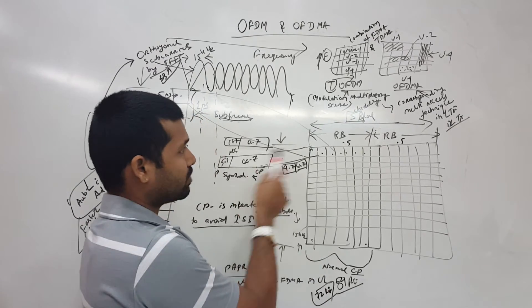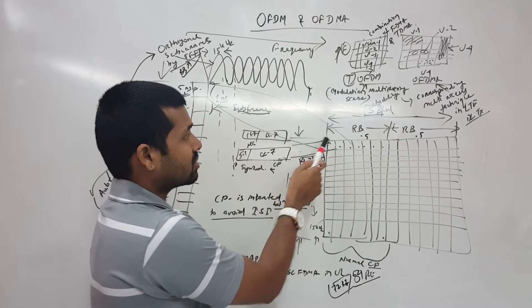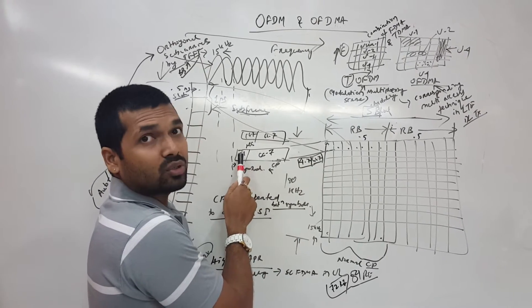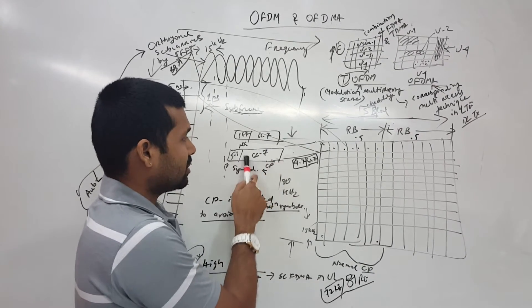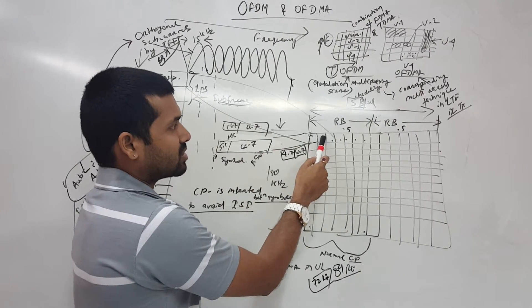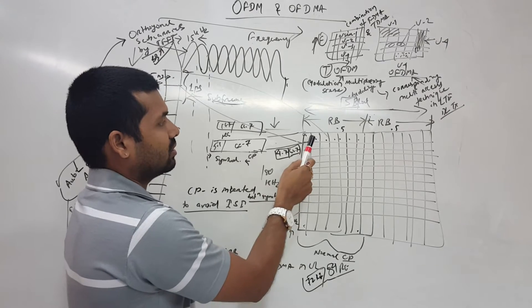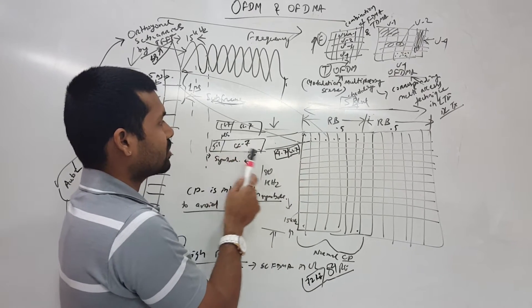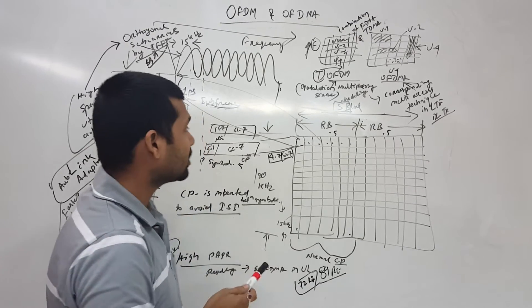I have explained one symbol here. In case of normal cyclic prefix, the first symbol is 5.1 microseconds cyclic prefix and the exact symbol timing is 66.7 microseconds. From 2nd, 3rd, 4th, 5th, 6th and 7th - except the first one - the cyclic prefix would be 4.7 and 66.7 correspondingly.